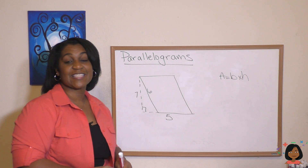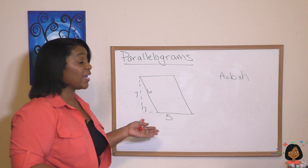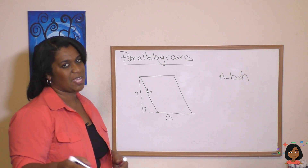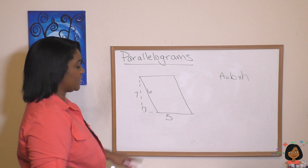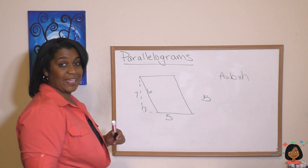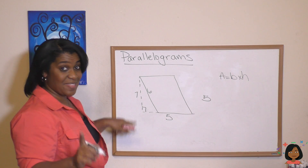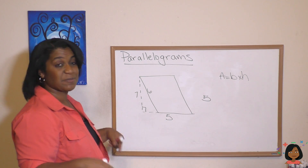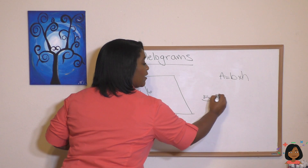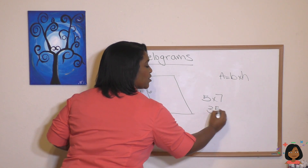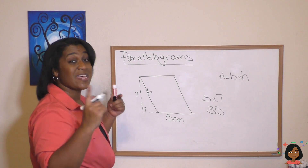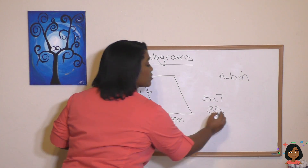Take a look at this example — we want to find the area of this parallelogram. Area equals base times height. Our base is 5, and our height is 7, where that dotted line drops in the 90-degree angle. 5 times 7 is 35 centimeters squared.